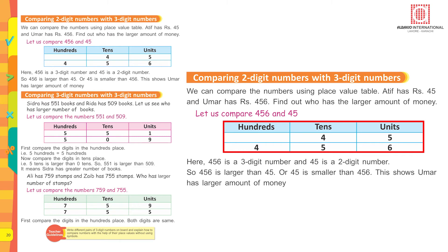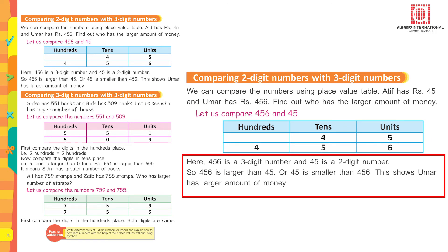For 45: four tens and five units. For 456: four hundreds, five tens, and six units. 456 is a three-digit number and 45 is a two-digit number, so 456 is larger than 45, or 45 is smaller than 456. This shows Umar has the larger amount of money.